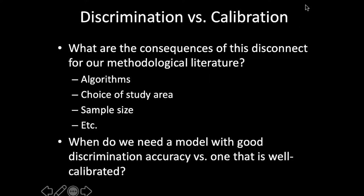For some applications you just want discrimination accuracy, and that's fine. But for many applications, the metrics we use only work if model predictions can be treated as probabilities, which means those models have to be well calibrated. What I've shown is that in many conditions, discrimination accuracy cannot tell you which models do that. So we may be selecting models based on criteria that are unrelated to the performance we want. This problem may extend well beyond any given empirical study — our whole literature of methodological choices, which algorithms work best, how we choose our study area, what sample size we need, is almost entirely driven by discrimination accuracy on randomly withheld subsets of data.